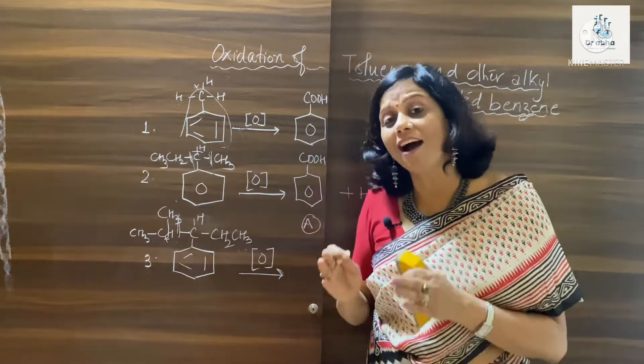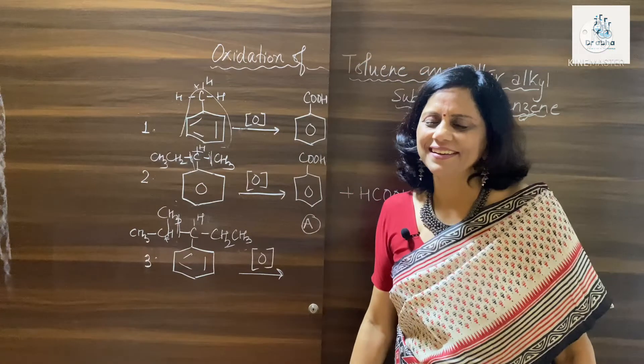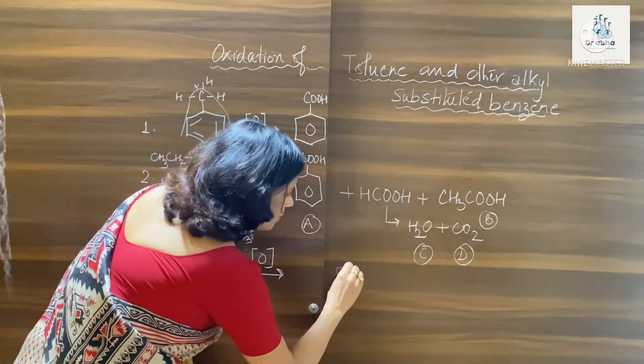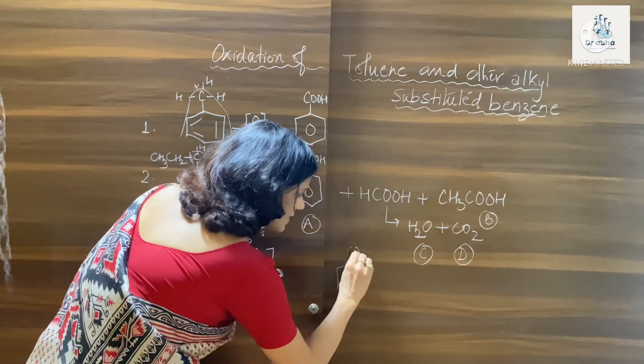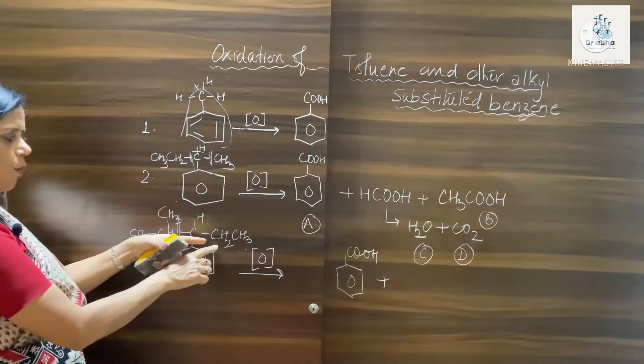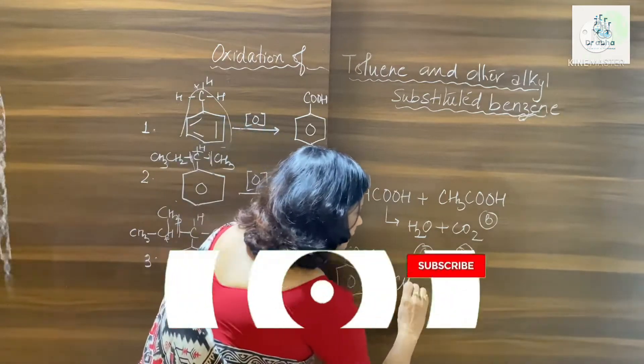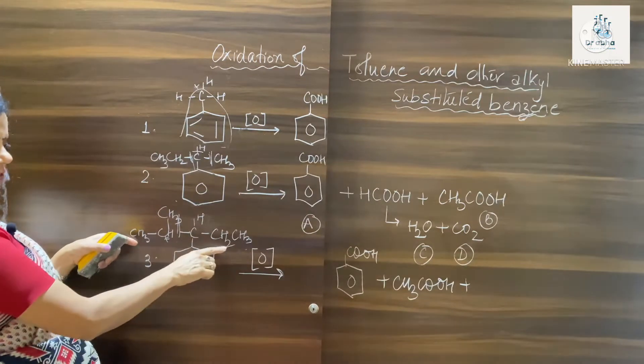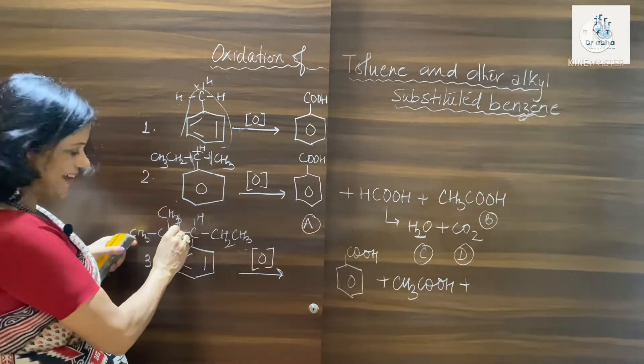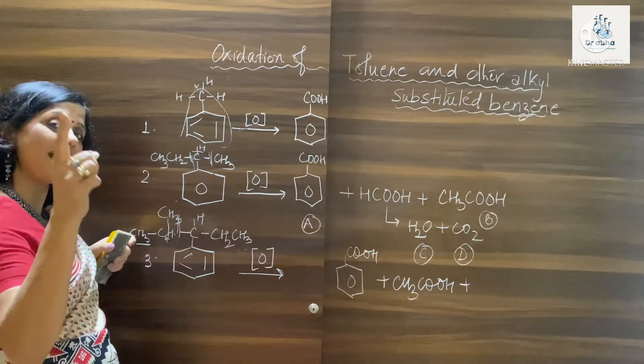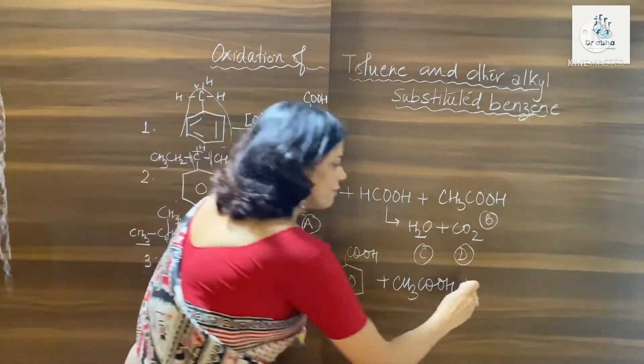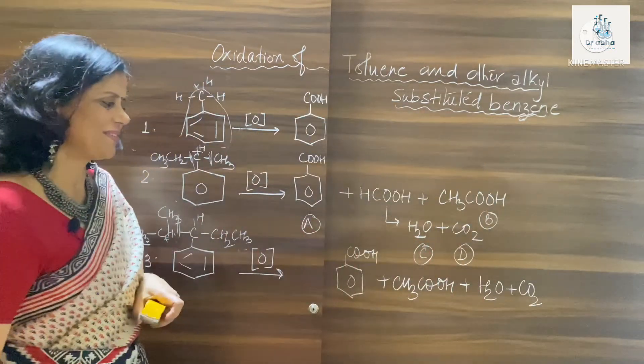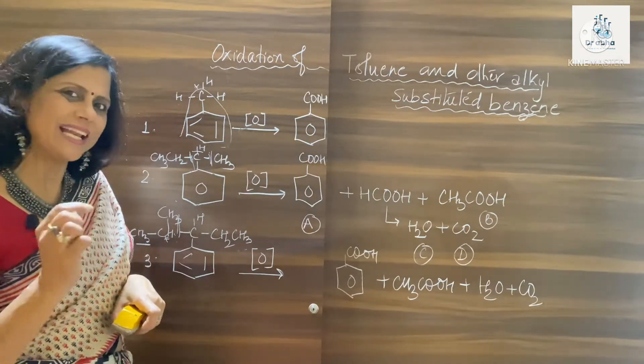So which products will we get? One is going to be benzoic acid as we are getting in all the cases. And one is ethanoic acid and formic acid. This carbon will give formic acid, and formic acid under those conditions will give you H2O and CO2. So again you are getting four products. So quickly let's do one more example.